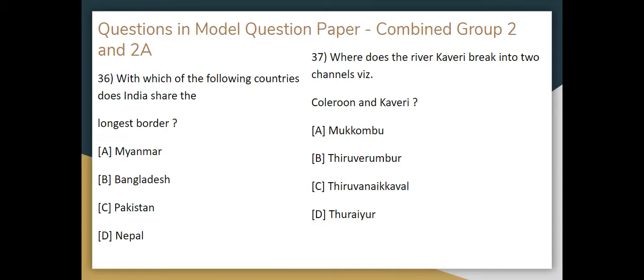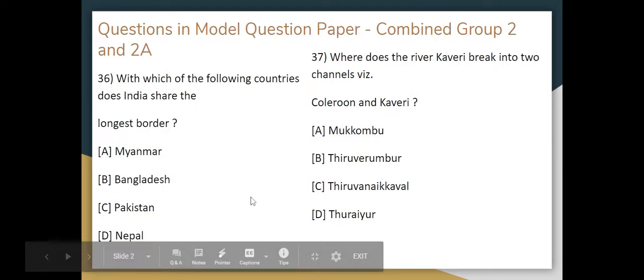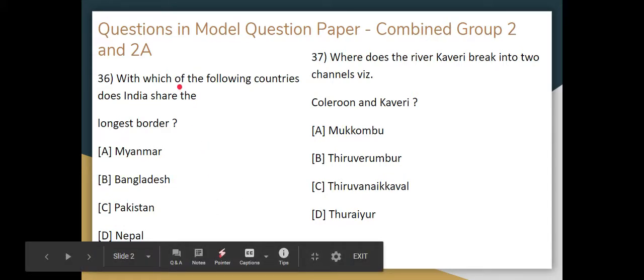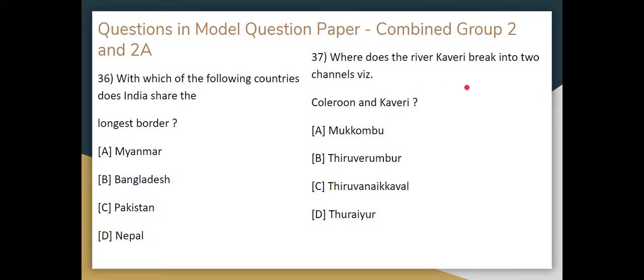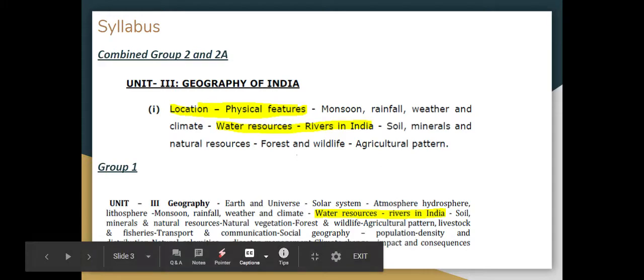So this is Part 3 of the video. For combined Group 2 and Group 2 revised syllabus, you can cover the unitary geography of India: location, physical features, water resources, rivers in India, and you can cover the monsoon, rainfall, weather and climate. We have already covered the geography. For Group 1 you can cover water resources, rivers in India, weather and climate, monsoon and rainfall — we have already covered it.